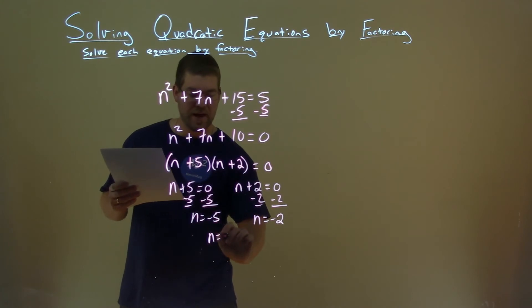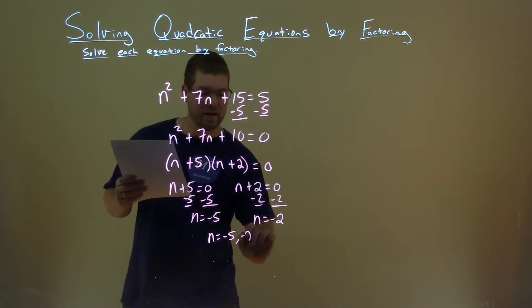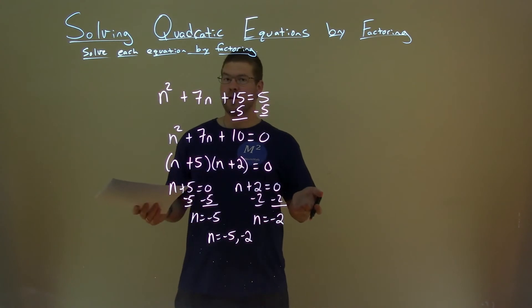And so, our two solutions are n equals negative 5 and negative 2, and that is our final answer.